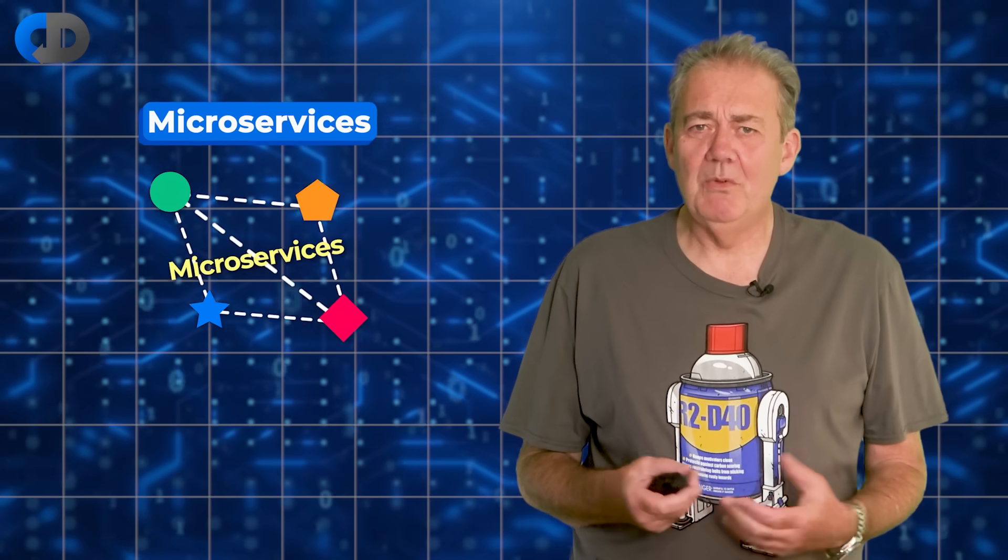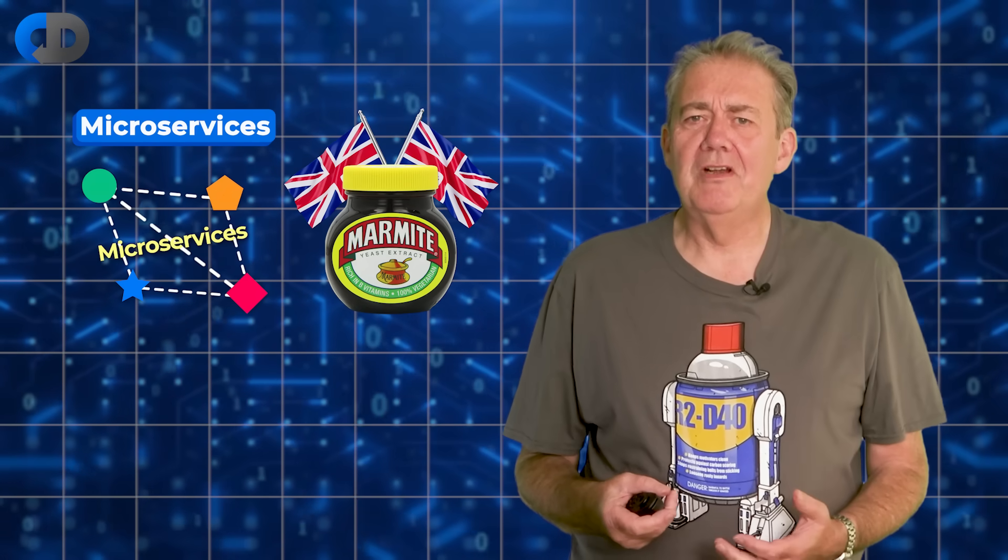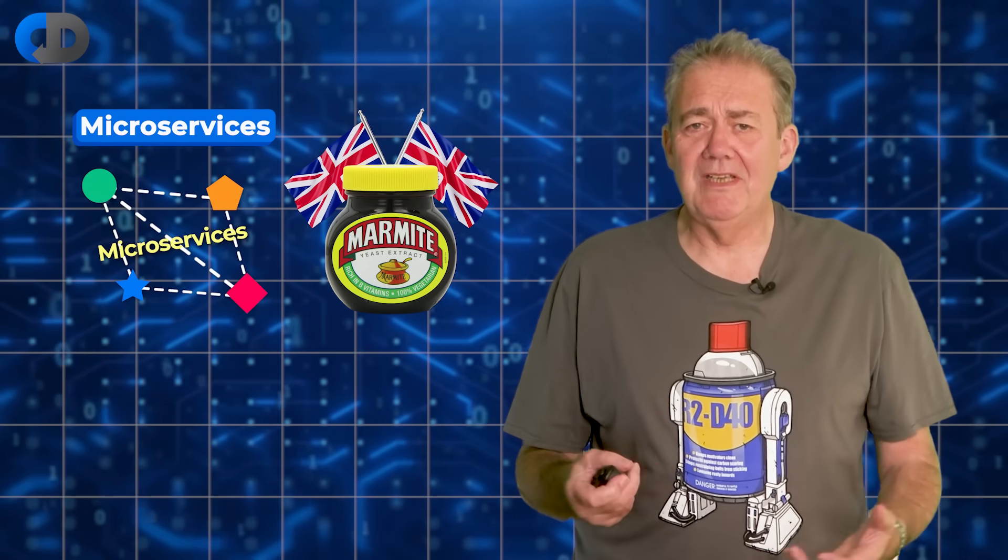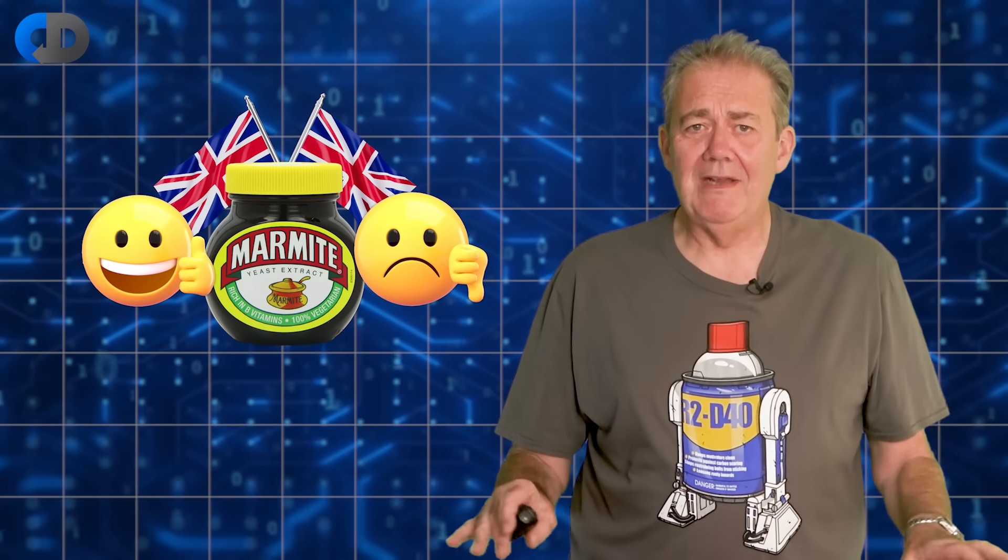Microservices seem to be what we in the UK call Marmite. Marmite is a strongly flavored spread that's mostly eaten with toast. That's almost defined by the fact that people either love it or hate it. There is no middle ground.